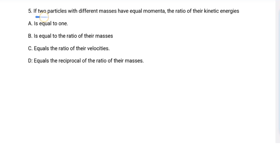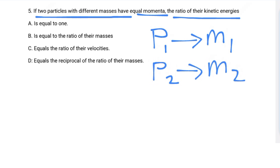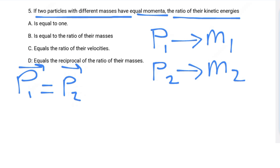The final question for part one: if two particles with different masses have equal momentum, what is the ratio of their kinetic energies? Particle one has mass m1 and particle two has mass m2, with different masses but equal momentum: p1 = p2. We want the ratio of kinetic energy one to kinetic energy two.